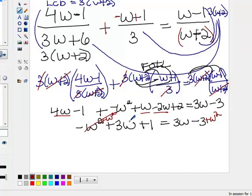And this is a positive 3w, so I'll subtract 3w, which will make that go away. And I'll subtract 1, which will make that go away. So I end up with 0 over here.